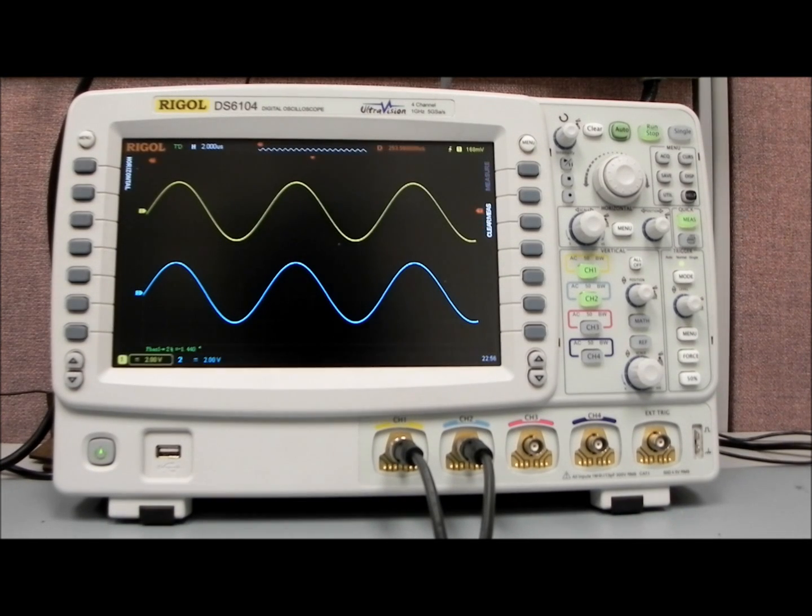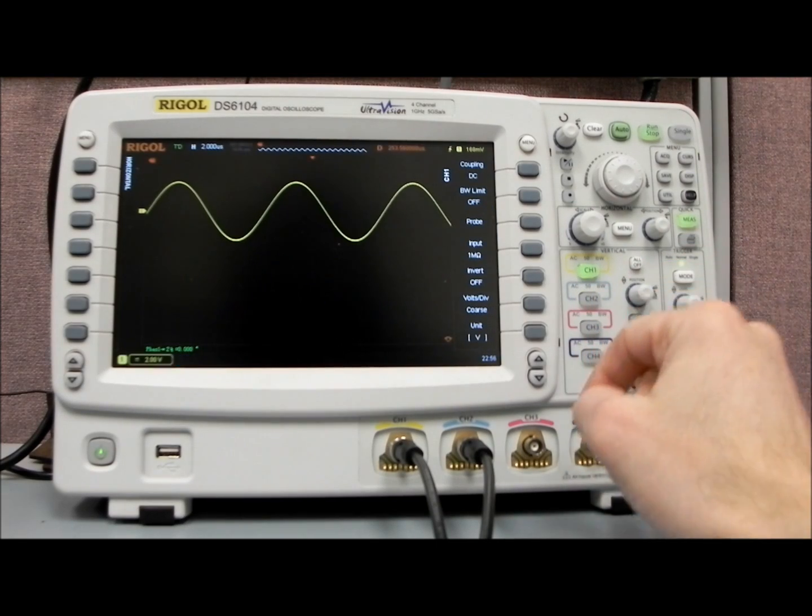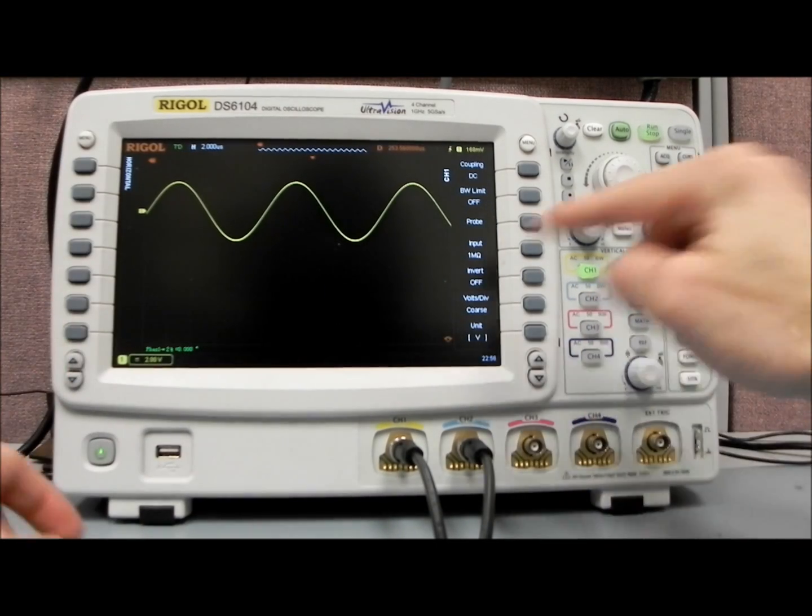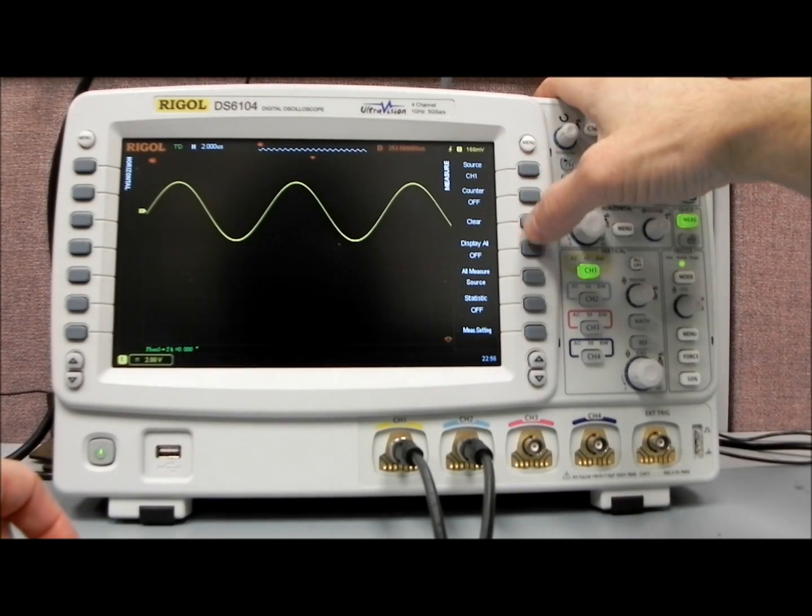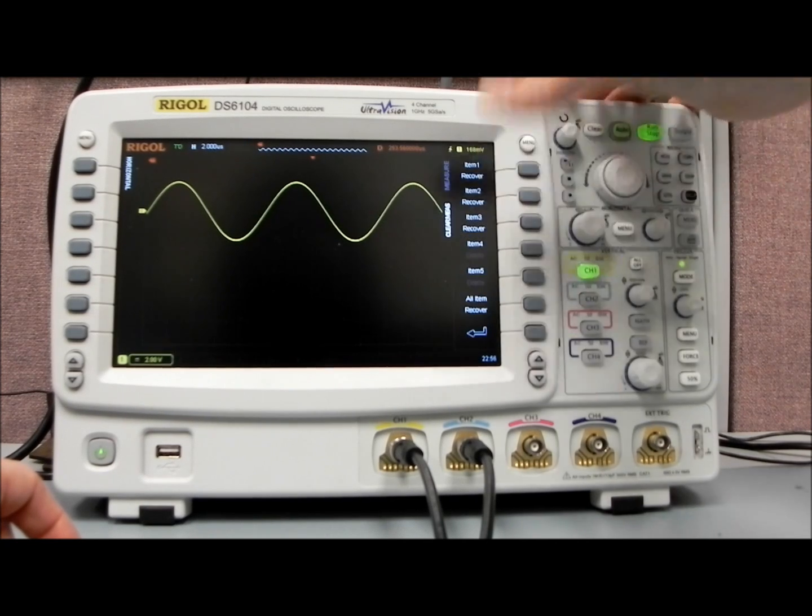And now I'd like to take a closer look at one more feature actually, the display persistence on the DS6000 before we wrap this up. I'm going to disable channel 2 and get rid of this measurement in order to make the display a little bit more clear. And we'll just hit all items.